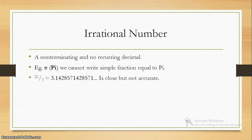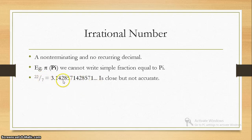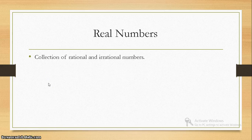Irrational numbers are non-terminating, non-recurring decimals. The best example is pi — we cannot get the accurate value of pi. 22 by 7 is approximately equal to 3.14 and this long decimal. It is close to pi but not accurate; it is a non-terminating fraction. That's why pi is an irrational number. Real numbers are the collection of rational and irrational numbers.